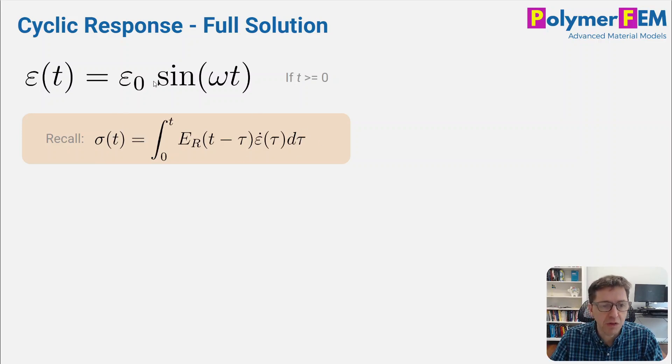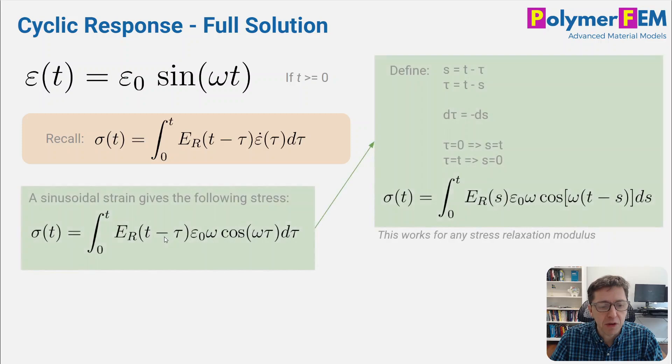So if you take the time derivative of the strain, we will end up with some equation that we can plug in, and this is what it looks like. So at the bottom here, we have the stress versus time, the relaxation modulus, and then we have the cosine, which comes out of the time derivative of the strain history.